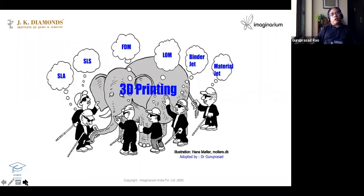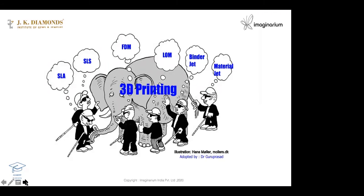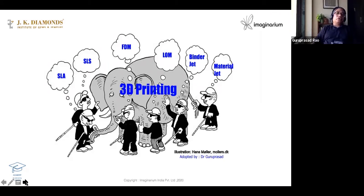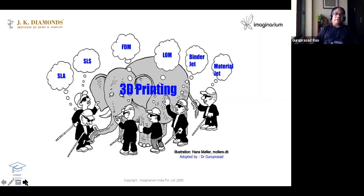They're all called 3D printing because you have different varieties. They're not just one — 3D printing is one of them, but there are different varieties. Some we call SLA, some we call SLS, some we call FTM, certain others we call LOM, binder jetting, material jetting. Then there is one more addition called directed energy deposition. These groups can only increase, but all are called 3D printing. That brings us to the definition of 3D printing.